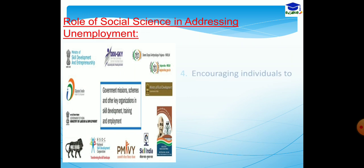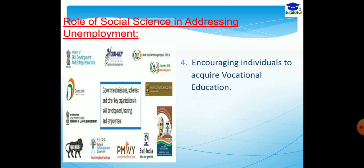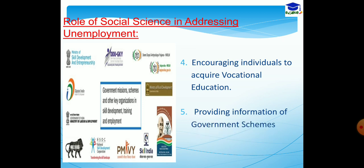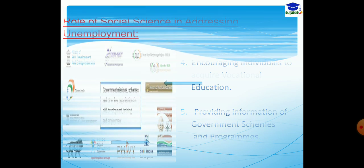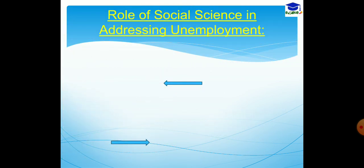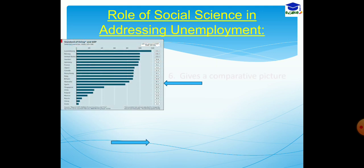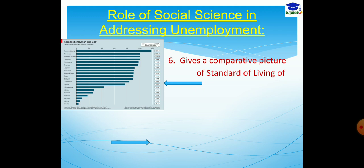Number four, by encouraging individuals to acquire vocational education. The subject can also encourage people to acquire vocational education, and by encouraging those people, the subject can do its best to minimize this issue. Number five, by providing information on government schemes and programs. It is also the responsibility of social science to provide information about the schemes taken by the government to minimize or eradicate the problem of unemployment, so that people can benefit from those particular schemes.